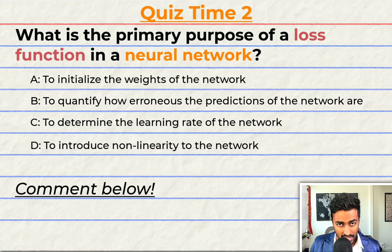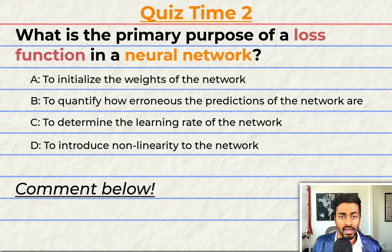It's that time of video again. Have you been paying attention? Let's quiz you to find out. What is the primary purpose of the loss function in a neural network? A. To initialize the weights of the network. B. To quantify how erroneous the network's predictions are during training. C. To determine the learning rate of the network. Or D. To introduce non-linearity to the network.